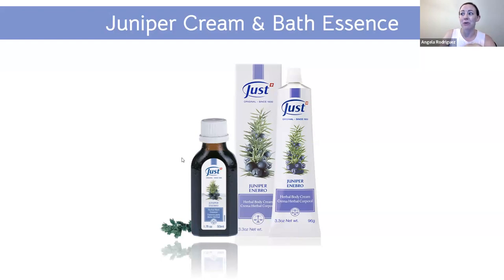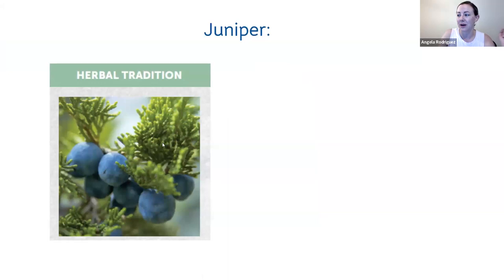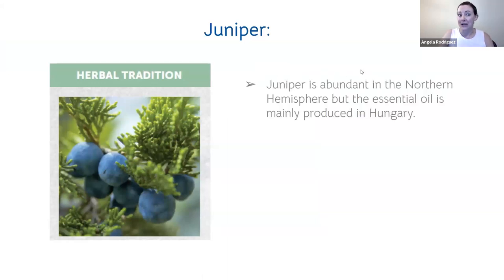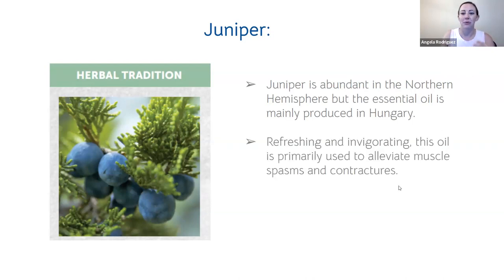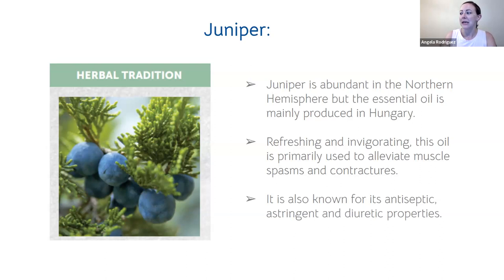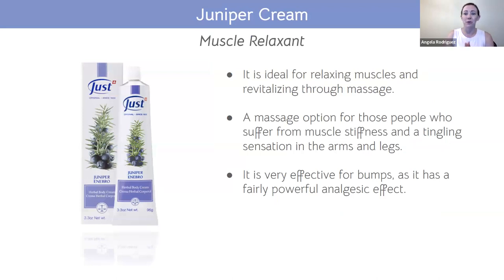For our spotlight today we're talking about juniper cream and juniper bath essence. A lot of us have juniper cream because it comes with our consulting kit — it's one of our favorites. Juniper is a really important natural ingredient used in these products. It's an essential oil with refreshing and invigorating properties, used to alleviate muscle spasms and tightness — a really good anti-inflammatory, relaxing essential oil.